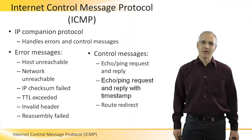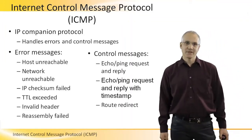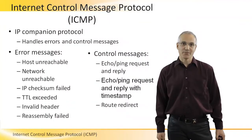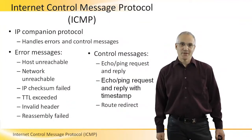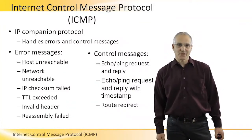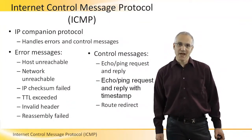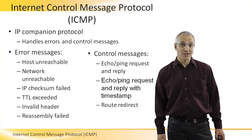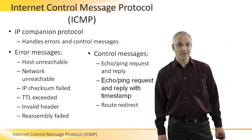When there's some problem with an IP packet, it is dropped. But once it is dropped, ICMP sends an error message back to the source in order to notify it that there was an error.